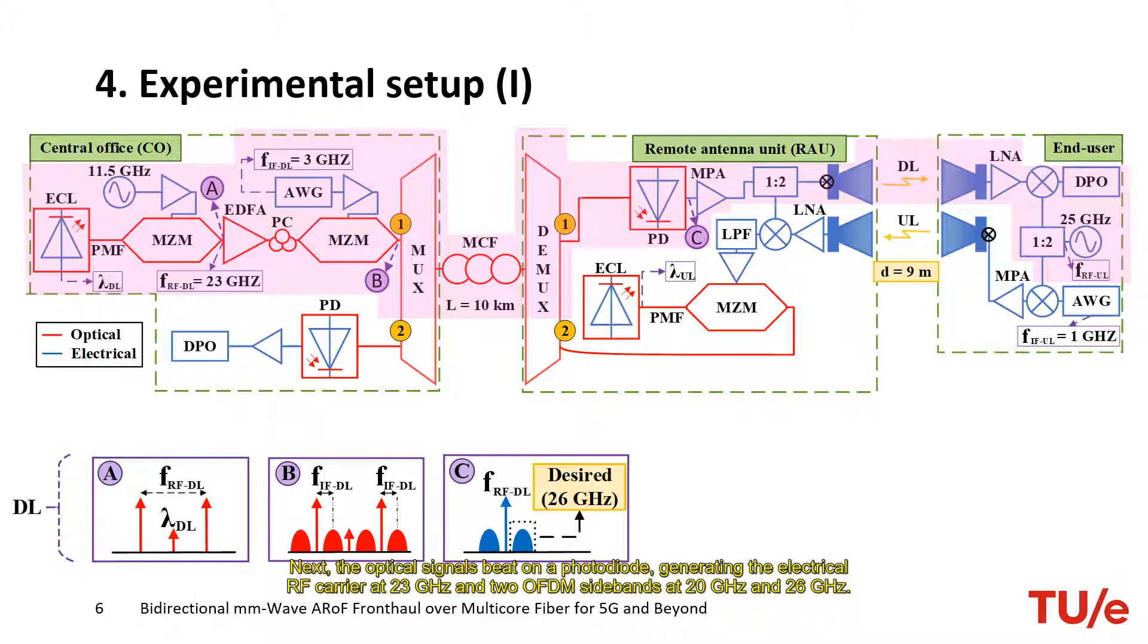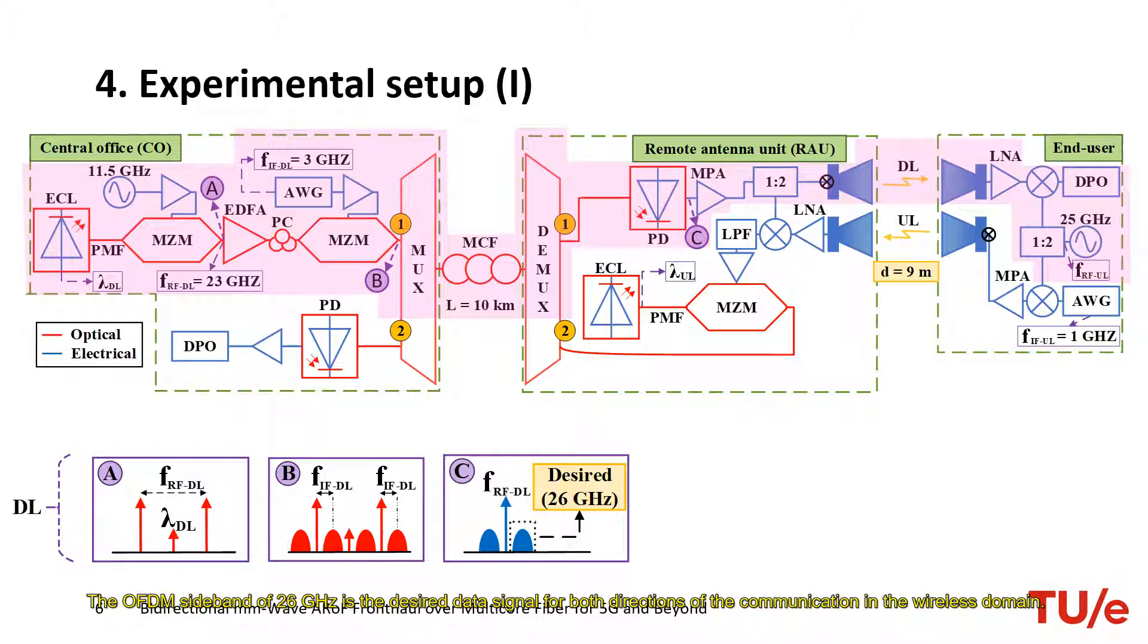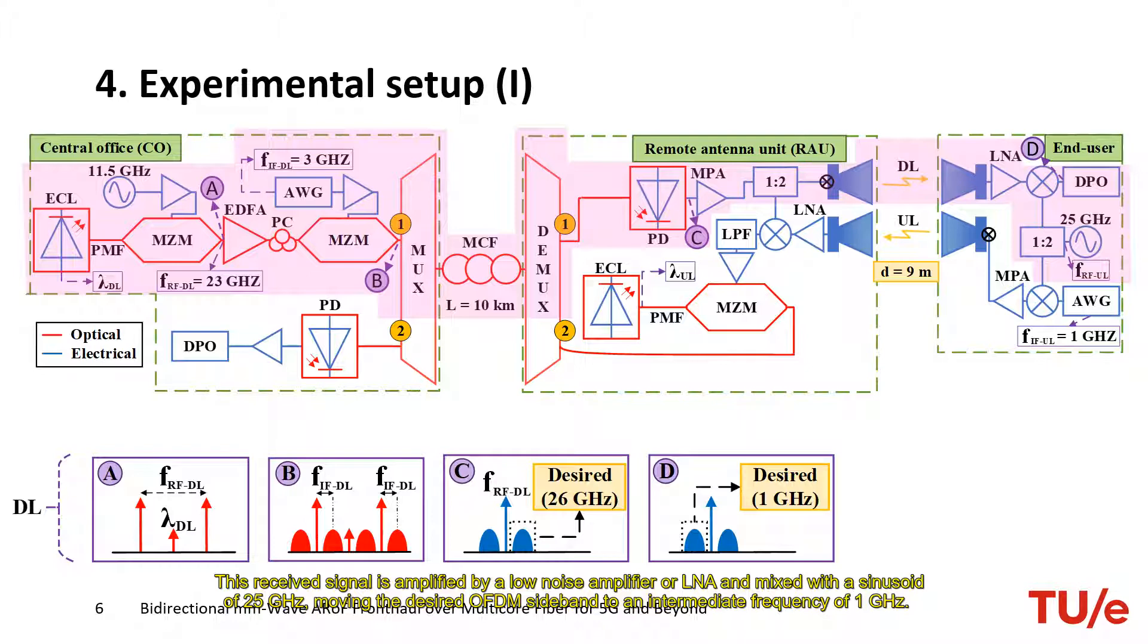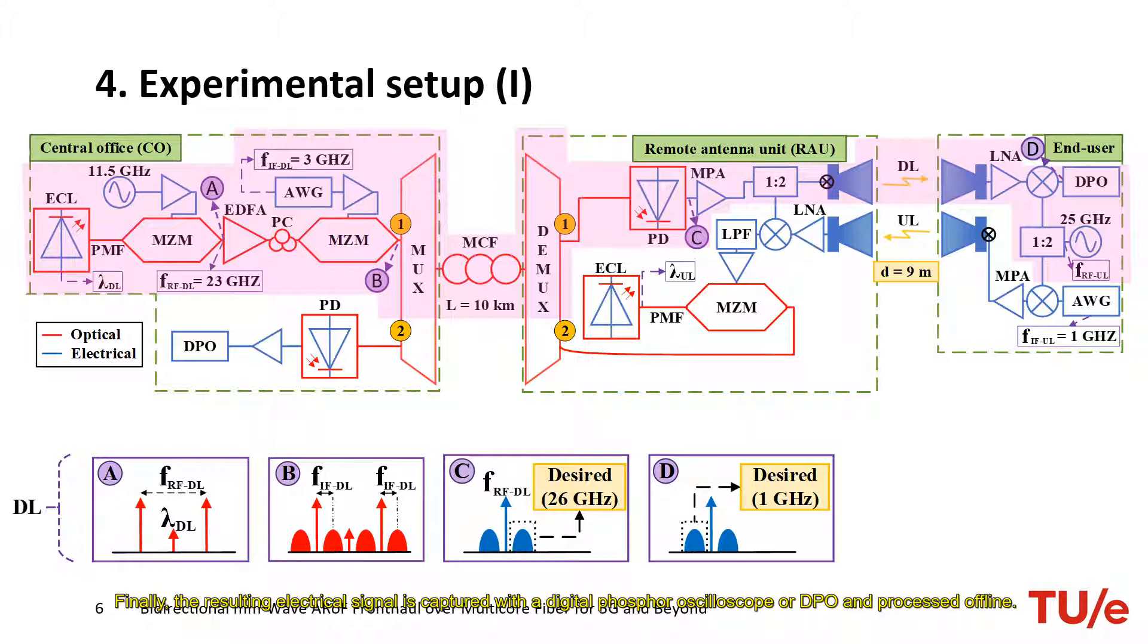The OFDM sideband of 26 GHz is the desired data signal for both directions of the communication in the wireless domain. Later, the obtained electrical signal is boosted and launched to the wireless link of 9 m by utilizing a medium power amplifier or MPA and a horn antenna respectively. Next, the receiver antenna of the end user catches the transmitted signal. This received signal is amplified by a low-noise amplifier or LNA and mixed with a sinusoid of 25 GHz, moving the desired OFDM sideband to an intermediate frequency of 1 GHz. Finally, the resulting electrical signal is captured with a digital phosphor oscilloscope or DPO and processed offline.